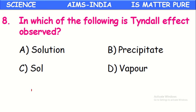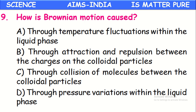In which of the following is the Tyndall effect observed? Solutions which contain small solid substances not dissolved in the liquid — called colloidal solutions — can show the Tyndall effect. How is Brownian motion caused? When molecules collide between each other, Brownian motion is observed. It is caused through collision of molecules between the colloidal particles.